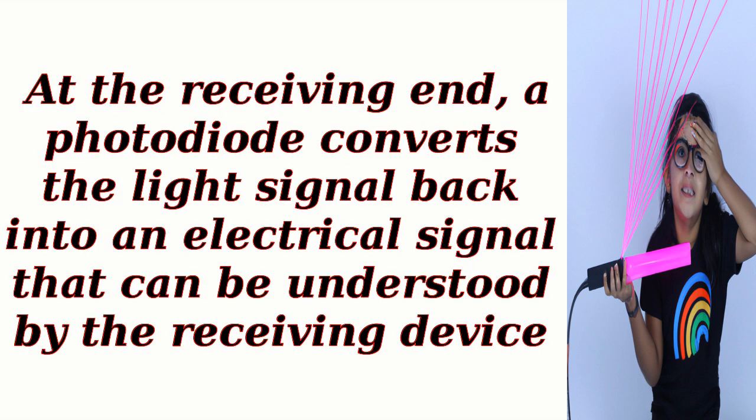At the receiving end, a photodiode converts the light signal back into an electrical signal that can be understood by the receiving device.